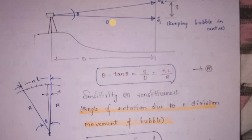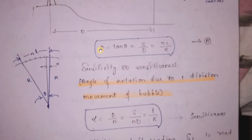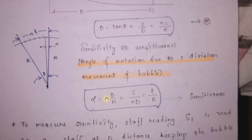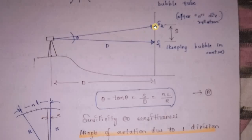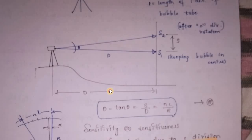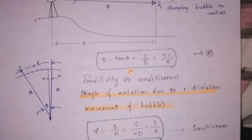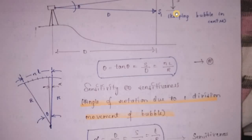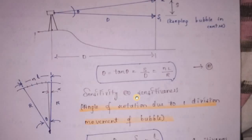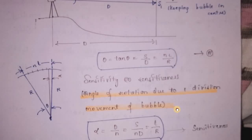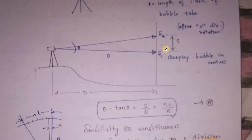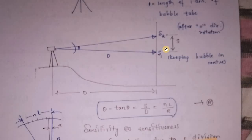For bubble tube sensitivity: the total arc length L equals R times theta. So theta equals NL divided by R, where N is the number of divisions. Also, theta equals S by D, and S equals N times L. Therefore, one division of the bubble tube gives S equal to NL.